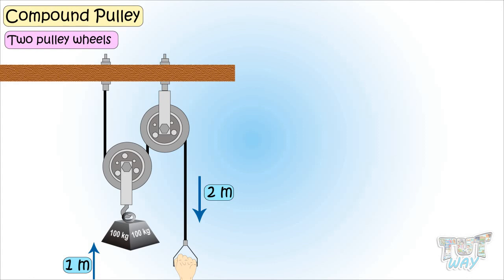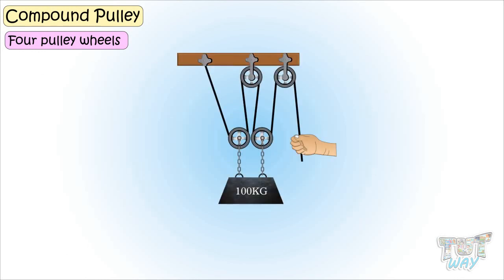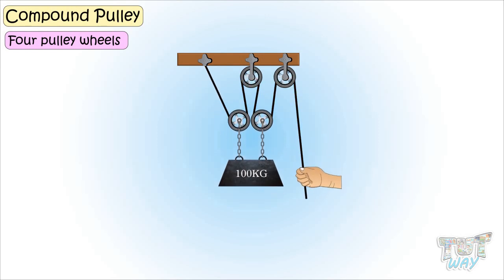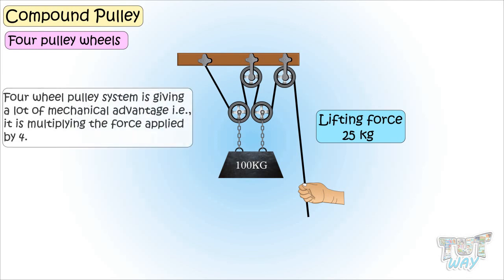Now let's see a compound pulley having four pulley wheels. Here we have a compound pulley with four pulley wheels. Here 100 kg weight is equally supported by four pulleys and an even longer rope. This means you can lift it by pulling with a force of just 25 kg, that is one fourth of the force otherwise required. So it's giving you a mechanical advantage of 4.